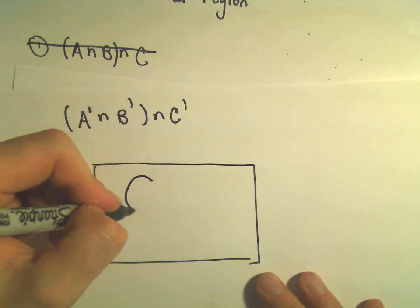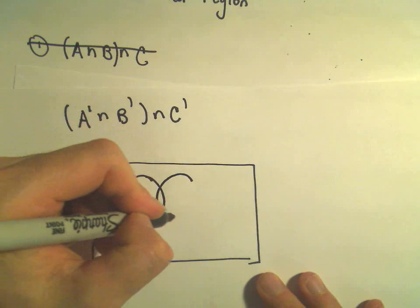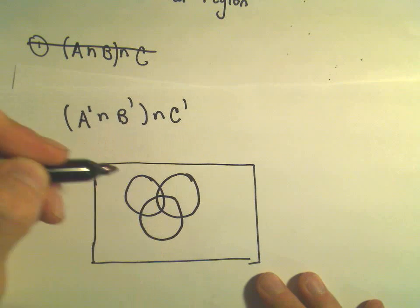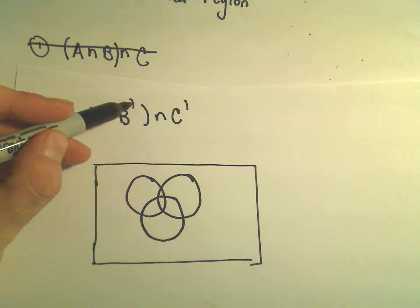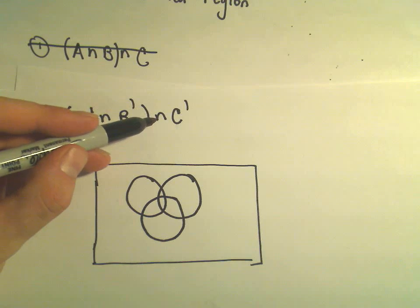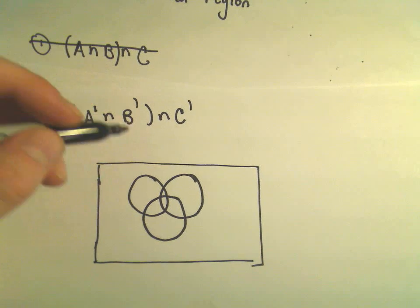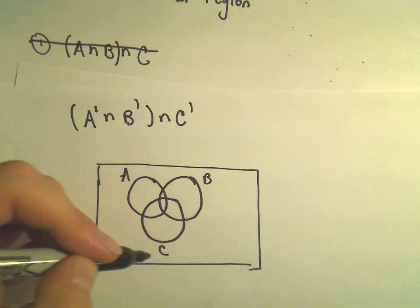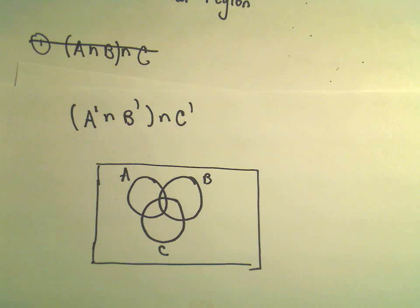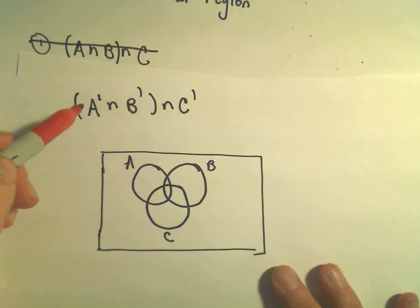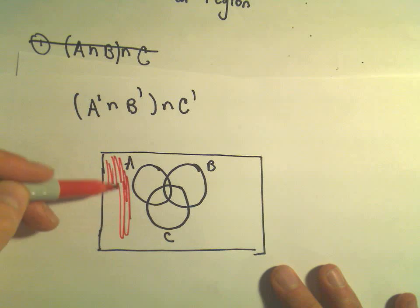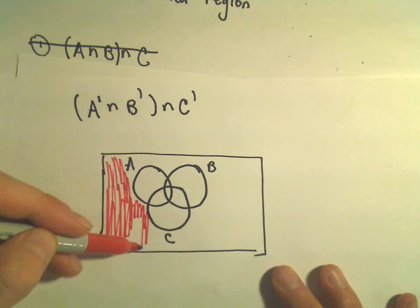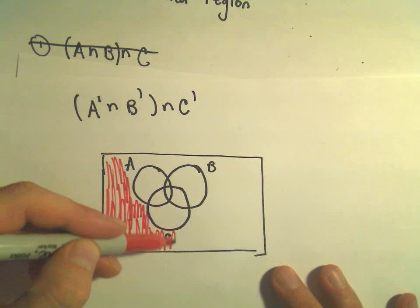But again, to me, what this says is, it really says shade in things that are not in A and not in B and at the same time, they have to be not in C. So if we were to shade that region, maybe pause and try to come up with this region. If we do everything that's not in A and not in B and not in C, I claim it's just going to be the stuff on the very outside of our three circles.